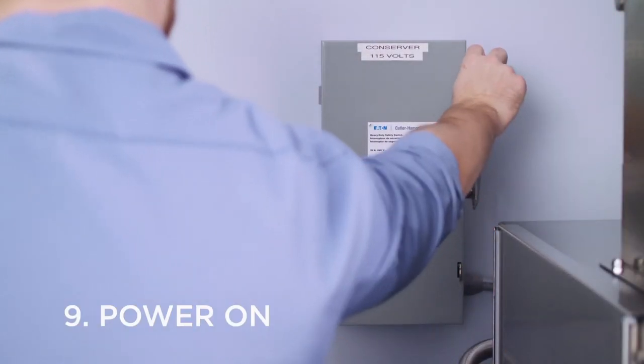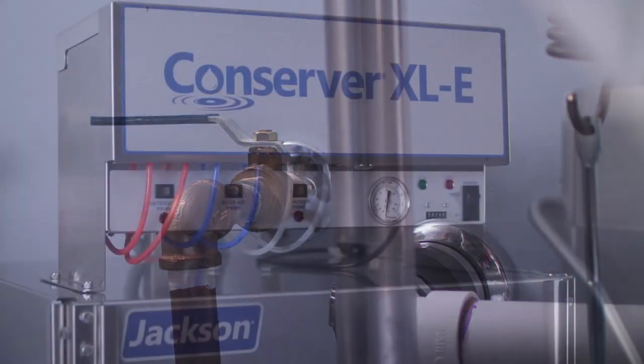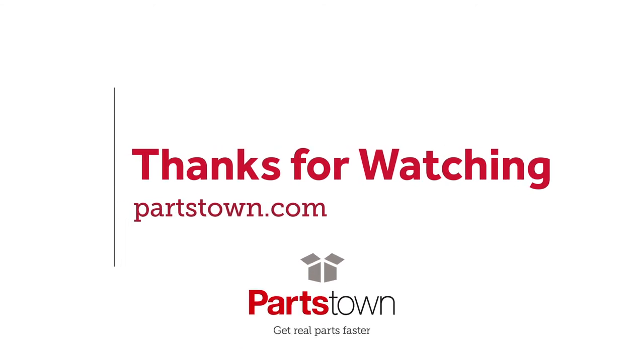You can now restore power at the circuit breaker and open the valve to the water supply line. For further information, refer to your Jackson Conserver Operator's Manual, available online.